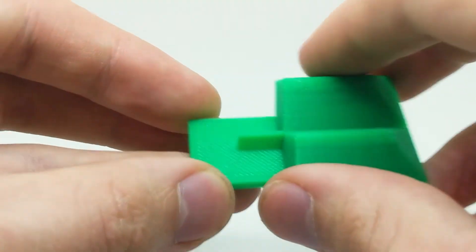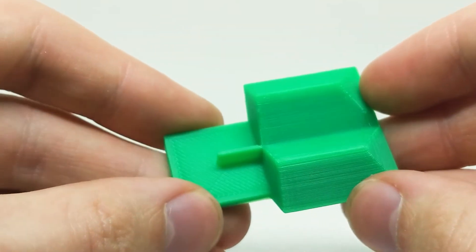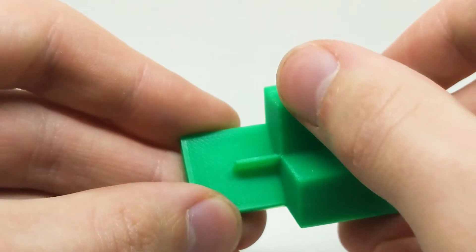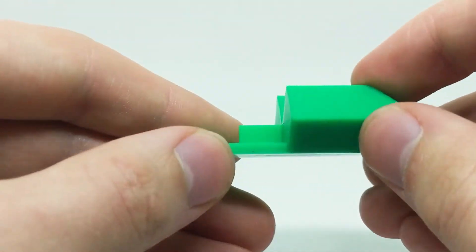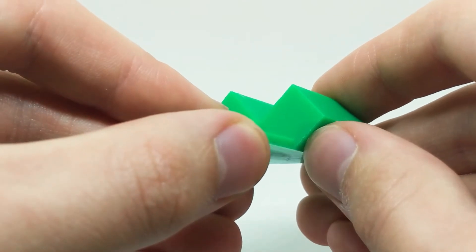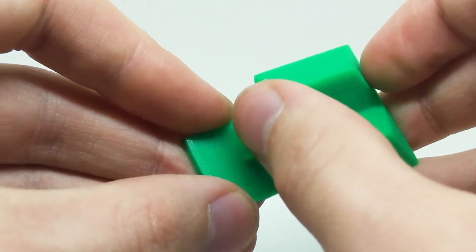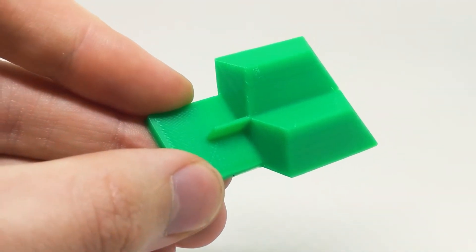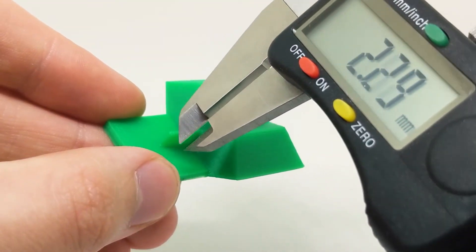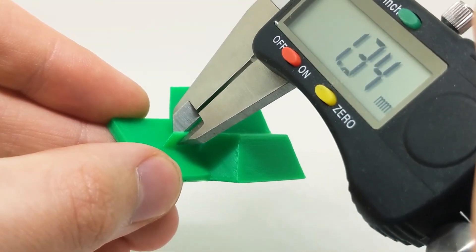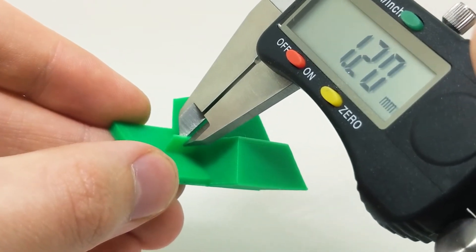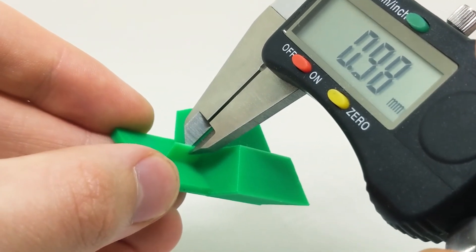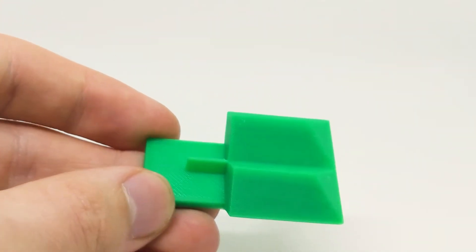Now I'm going to bring in the same test print done at 100% extrusion multiplier, just to compare it. You can see we've got none of that bulging at the top. The top surface here is nice and smooth. That bulge on that edge there, that is gone. And I'll measure this one now too. And you can see that it's right about bang on 1mm thick, yeah just about 1mm. So that one's looking really good.